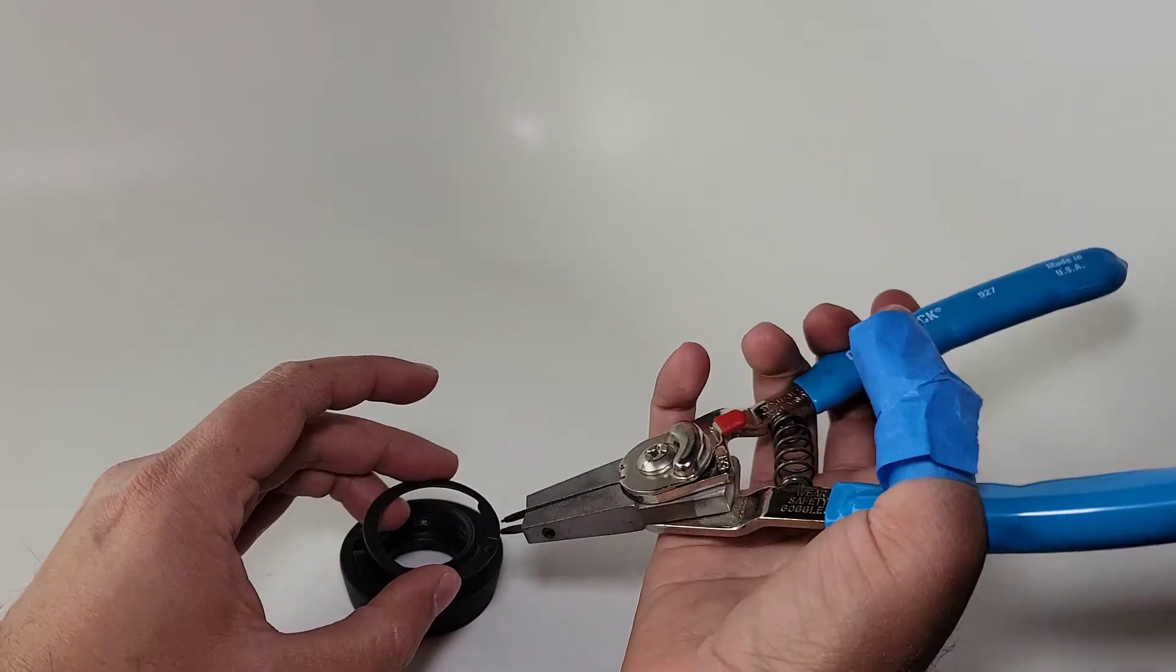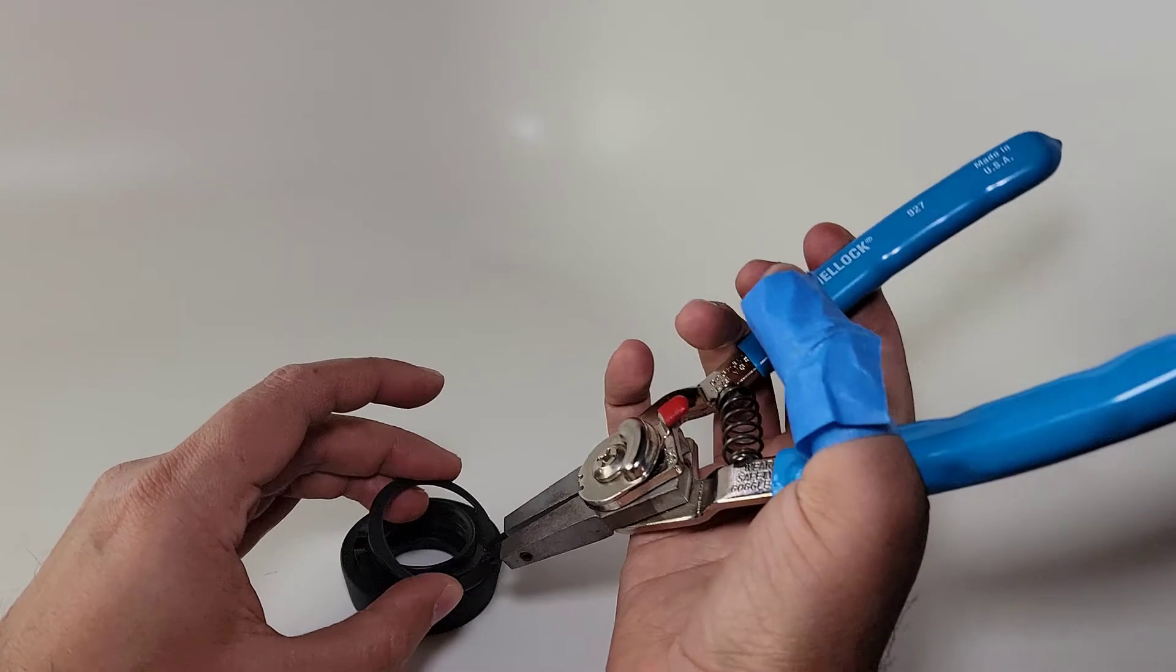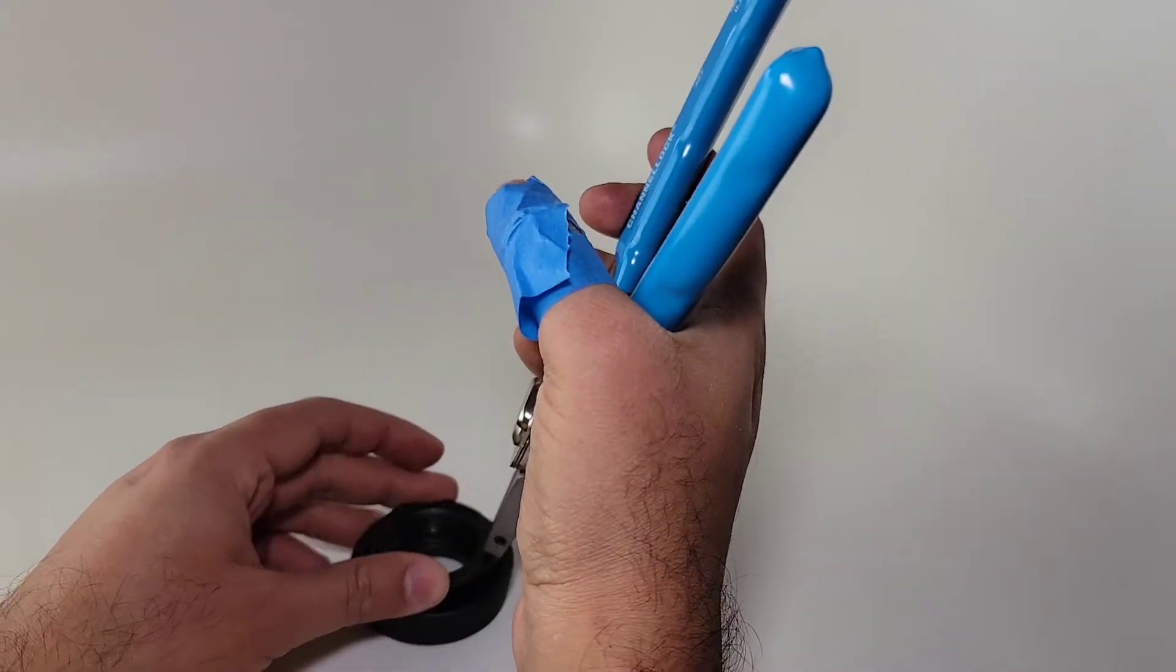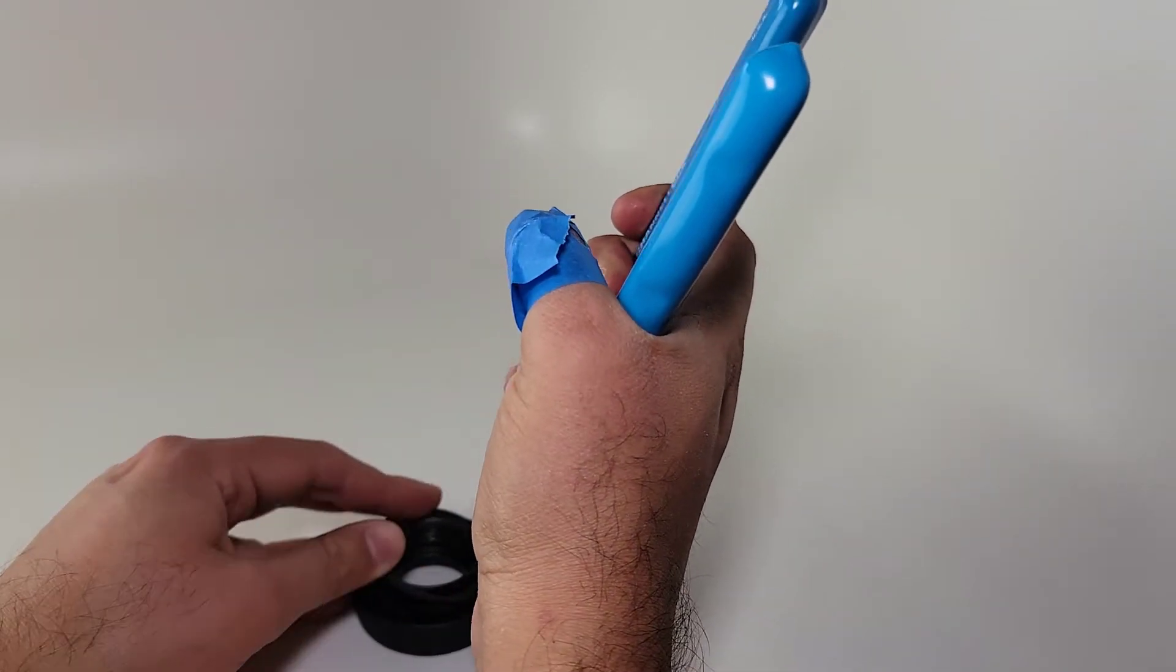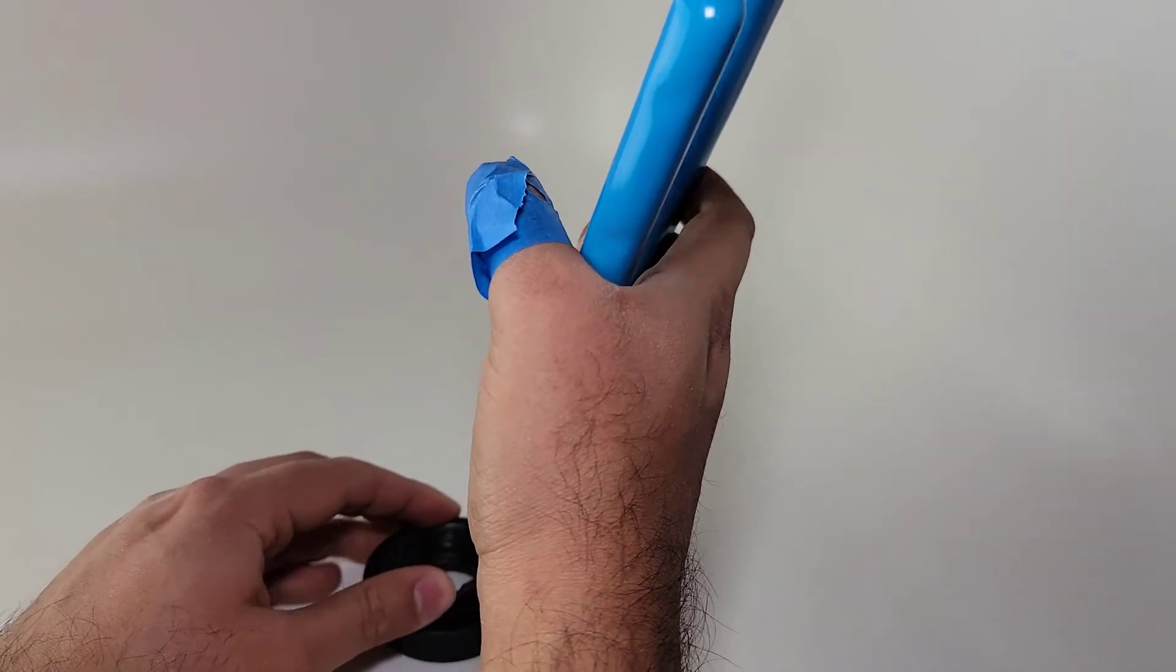We're going to put these tips right in these holes on the snap ring. We're going to place this in. There we go.